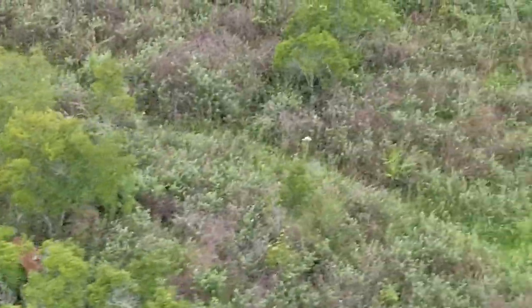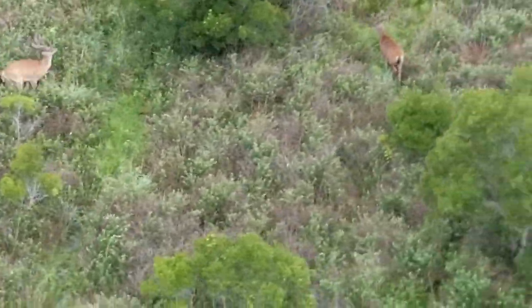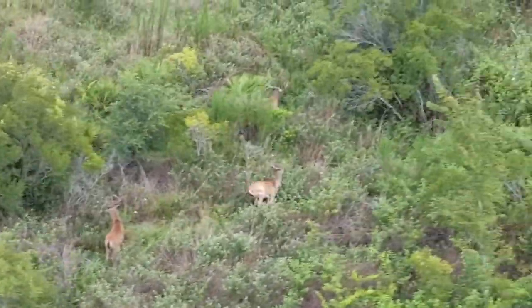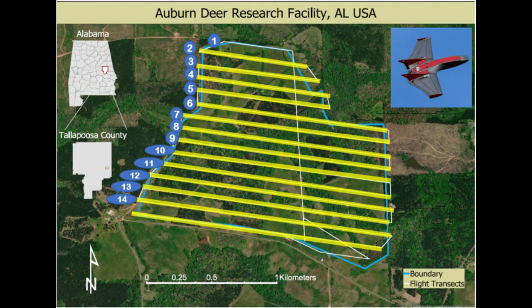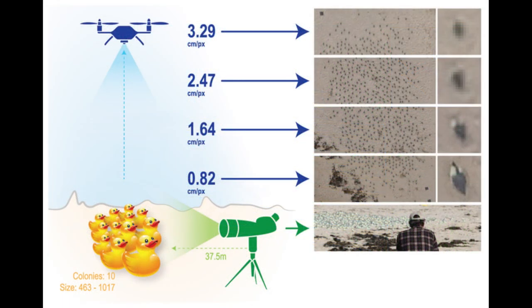Some of the drawbacks of UAVs are the reduced range and fly time as opposed to helicopters. They can only fly for so long before they need to come down, change batteries, and continue on their flight. So as opposed to one long survey in a helicopter, a UAV survey is a series of multiple smaller flights on the same transects. UAVs are also limited by the field of view of the cameras, as opposed to an observer sitting in a helicopter.